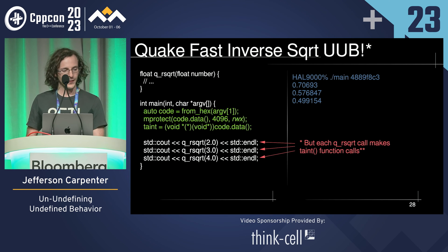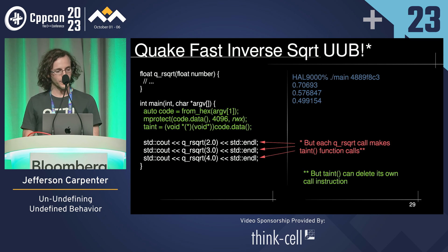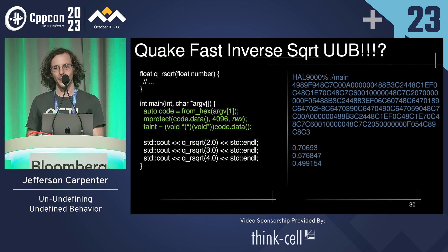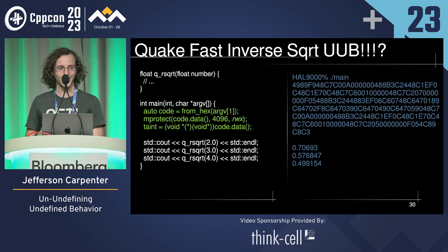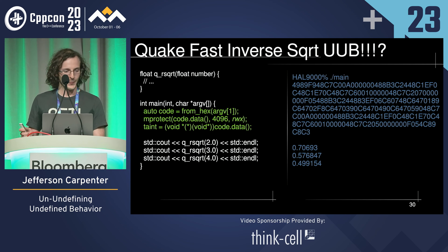You might complain that there's a performance issue since these square roots now make function calls. But we can address that by having the taint function that we pass in delete its own call instruction. It takes a little more assembly: this marks the page as writable, goes up using the stack pointer, overwrites the call instruction, and then writes the page as not writable again. We aren't checking argc here because this whole thing is UB, so don't worry about that.